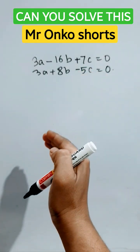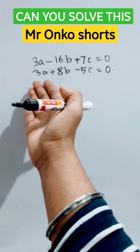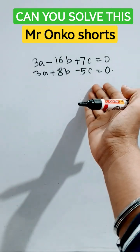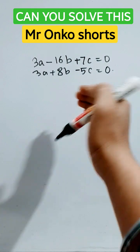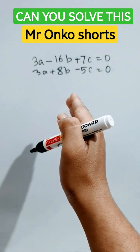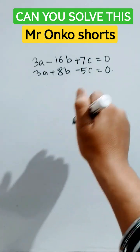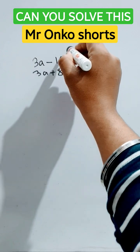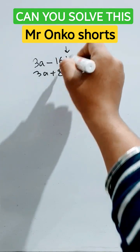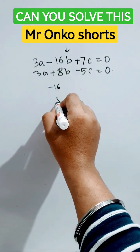Hello students, welcome to Mr. Ronko Shorts. Today we will learn how to solve this type of given equations using the cross multiplication method. First, write down the chart starting from the coefficient of b, that is minus 16.